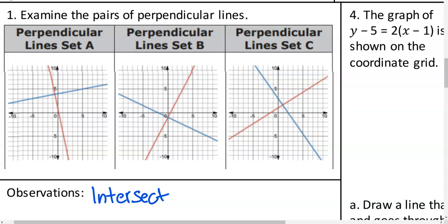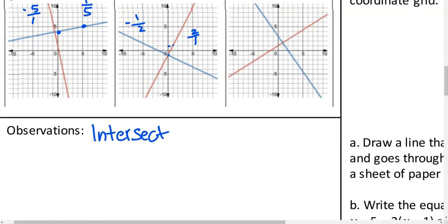Let's look at our first set, A. This blue line has a slope of what? Up one and over five. The red line has a slope of what? Up five and over one. Oh, interesting - it's also negative, right, because it's falling down. Let's see if that happens again. My red line - up two over one. What's the blue line? Down one over two. So what do you think is going to be special about perpendicular lines? They have the opposite - it's called opposite reciprocal.